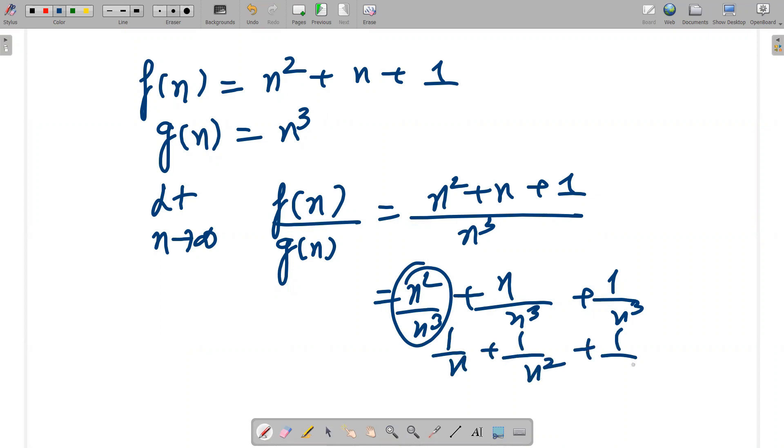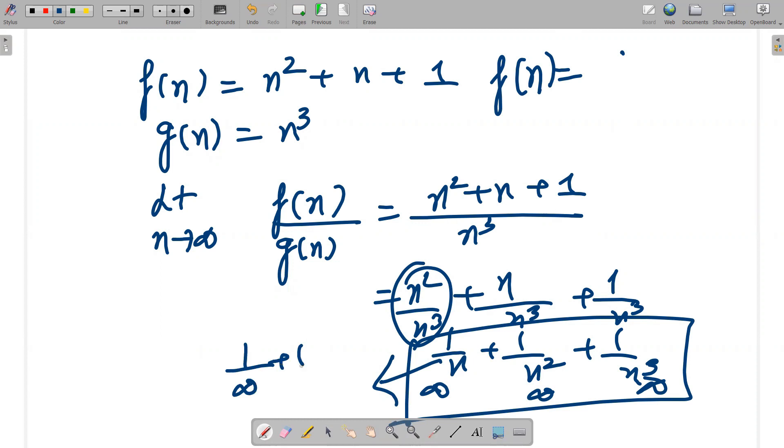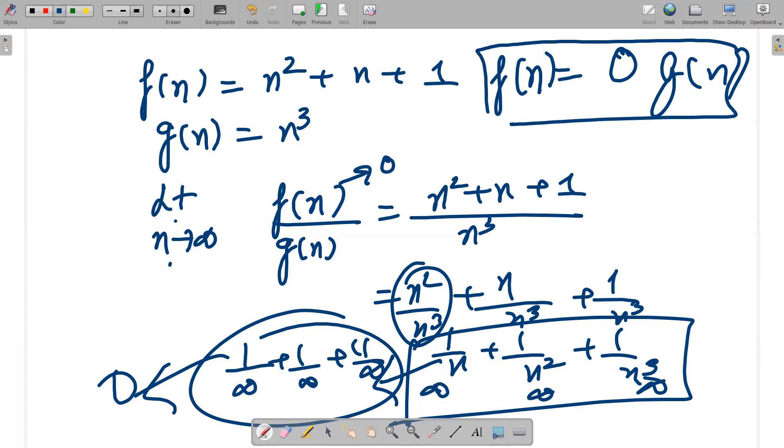n plus 1 by n² plus 1 by n³. All will be infinite. Clearly, 1 by infinite is 0, 1 by infinite is 0, and 1 by infinite is 0. All answers are actually 0, so it means clearly your limit n raised to power infinity f(n) is actually a 0 value. So clearly it is order of g(n). So these are the questions for limits. There are